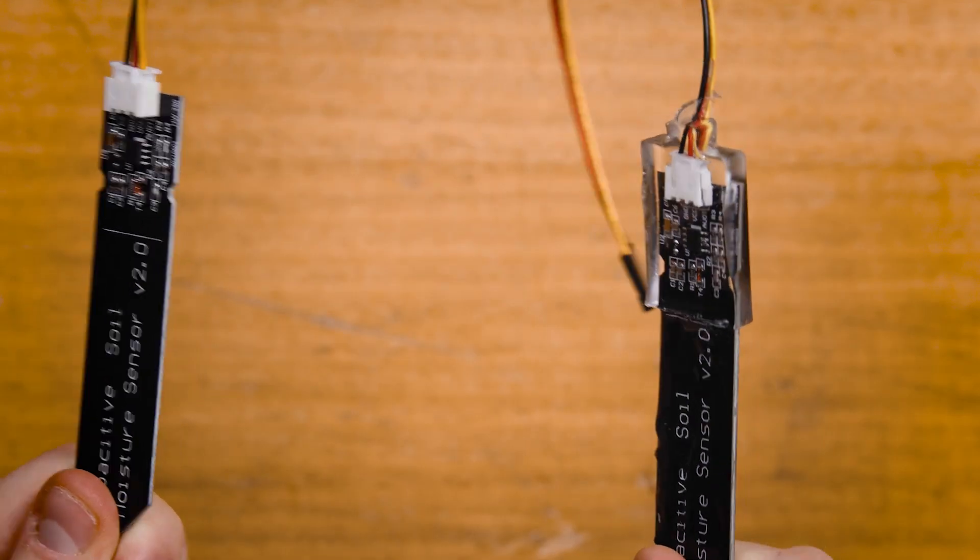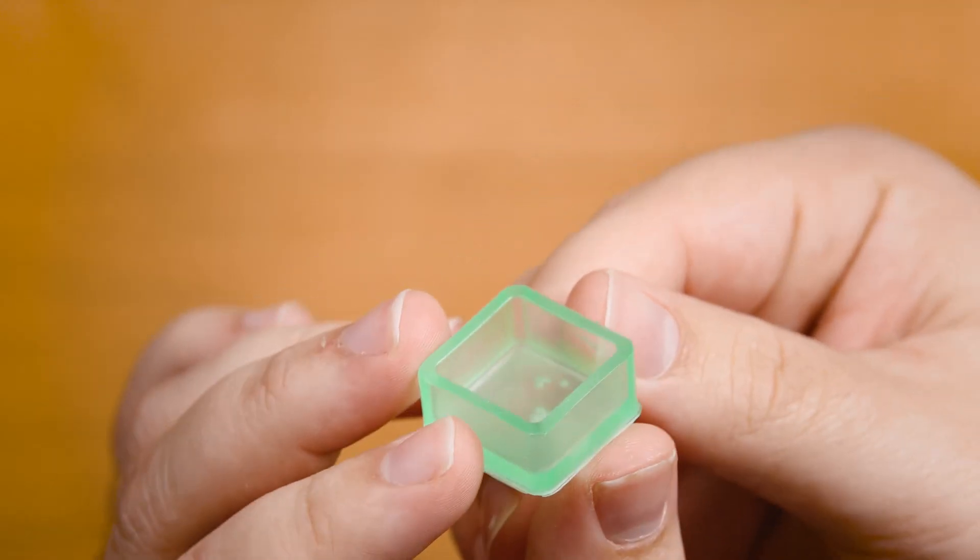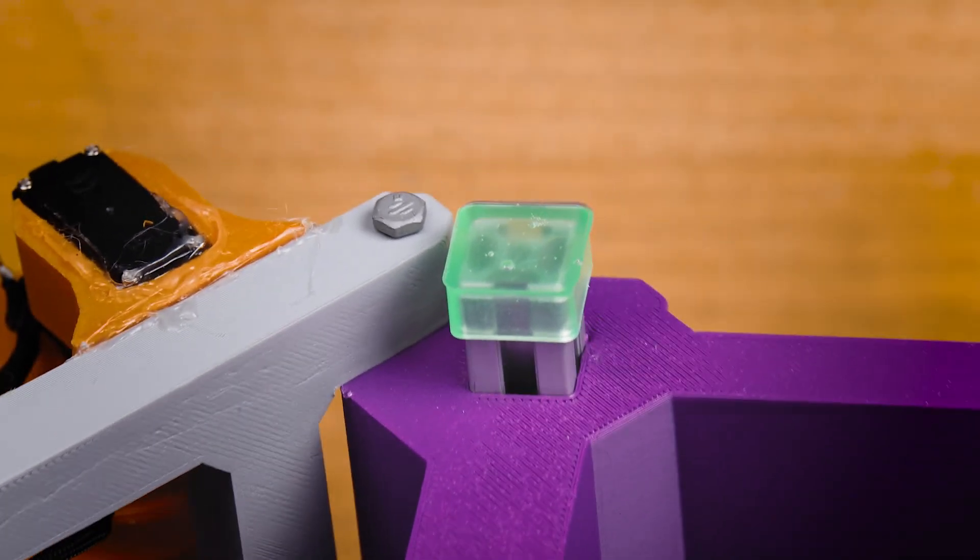I'm going to be waterproofing my soil moisture sensors by casting them in resin. And mine seems really lame because he's doing something cool like waterproofing electronics and I'm making an end cap that can be easily 3D printed, but it's just a test for the whole process and see how it goes.